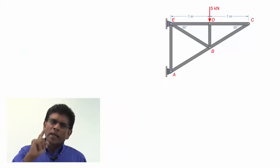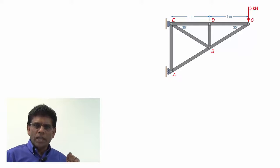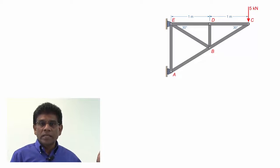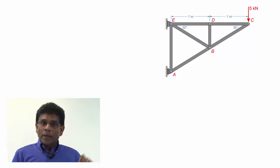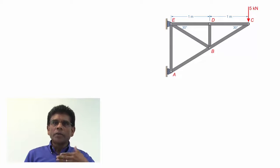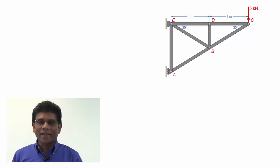Now, let's take a look at another scenario. I took the same problem and changed the loading condition. Now, the applied load is at joint C, and there is no load at joint D. Please pause the video now. Go ahead and do the calculations for the member forces one more time using the free body diagrams and come back.